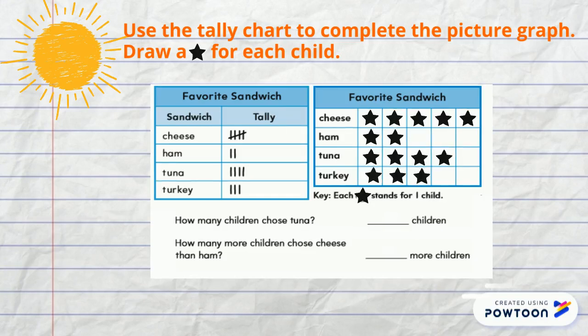Let's start answering the questions. How many students chose tuna? We will count the stars in the table and find that there are four, so we write four. Next question: how many more children chose cheese than ham? The word 'than' is a keyword for minus, so we write the number of cheese minus the number of ham, which is five minus two, equal three.